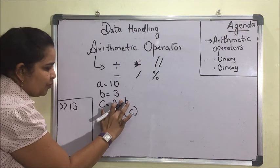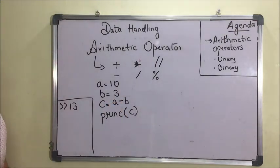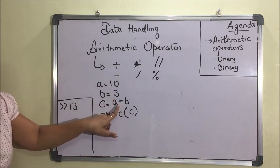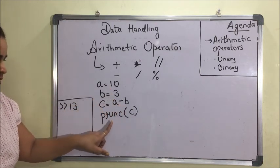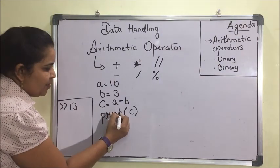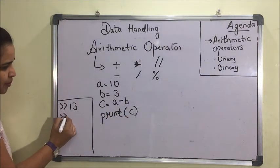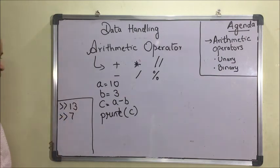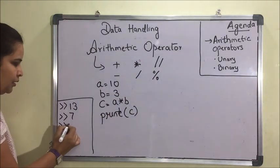If we want to subtract two numbers, a minus b — as 10 minus 3 is 7 — that will be stored in c, and when we print c, 7 will be printed. Similarly, we can use the multiplication operator, and 30 will be printed.